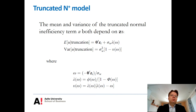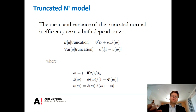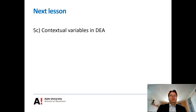If we want to use SFA, I would much more prefer models with the scaling property rather than the truncated normal model, which has this difficulty with interpretation. That completes my discussion of the SFA part, and as a next theme we will go to the modeling of contextual variables in the DEA literature, which is also a fascinating topic.